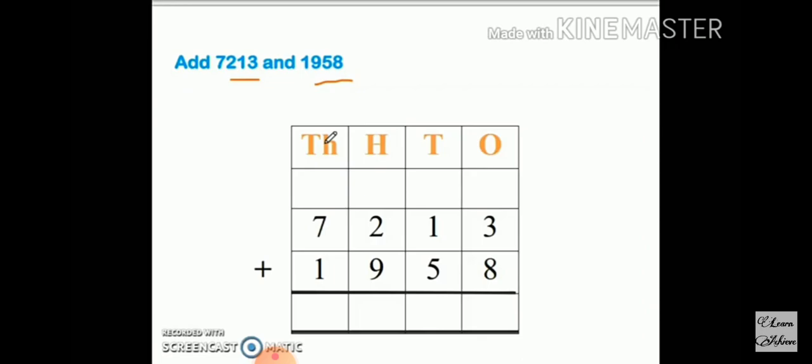We have to add. So rule number one: whenever we add, always go to your right hand side, you take unit number. After unit move on to tens, after tens move on to hundreds, then after thousands.